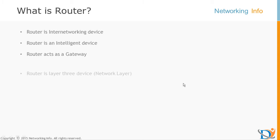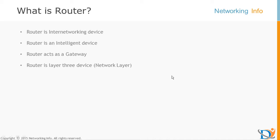Let's understand something more about router. Router is a Layer 3 device. We call it Layer 3 because it works in the network layer of the OSI model. Layer 3 means the router understands only IP packets — it takes decisions based on IP packets. It checks the source IP and the destination IP, then it finalizes the way to send the packet.